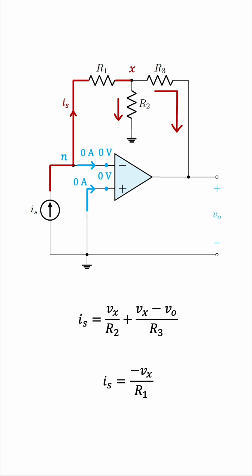With this second equation, let's find the ratio V0 to IS. To do this, I'm going to replace this IS by negative Vx over R1, which is the second equation. And now we can relate Vx to V0.